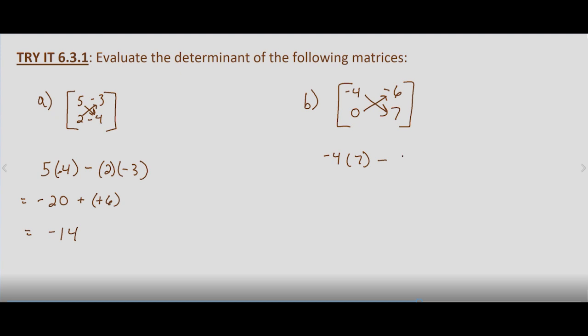Minus 0 times negative 6, so that's negative 28 minus 0, which equals negative 28.